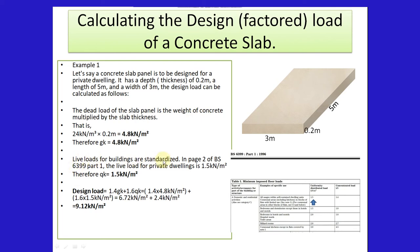Live loads for buildings are standardized. In page 2 of BS 6399 part 1, the live load for private dwellings is 1.5 kilonewtons per meter squared. Therefore, QK is equal to 1.5 kilonewtons per meter squared. This is a table of imposed load for floors, and you can see where the arrow points is 1.5.